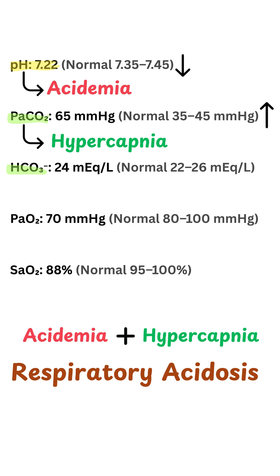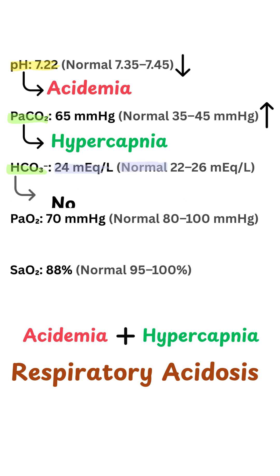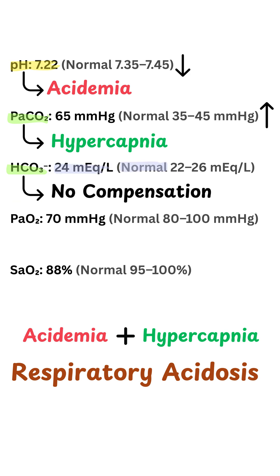Moving on to the third step, we want to know if there is any compensation — specifically, whether the kidneys are retaining bicarbonate to increase the pH of the blood. But we see that bicarbonate is within the normal range, so there is no compensation.